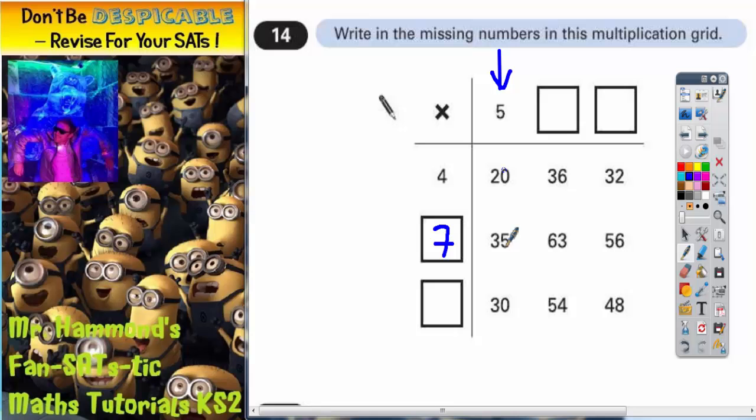to get 30? Well, if you know your five times table, you know that it's 6 times 5 is 30, so that number needs to be 6. Going up here, this one, we can use this 36 to help